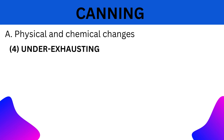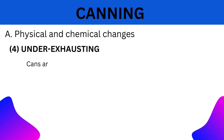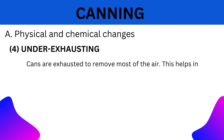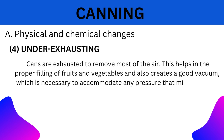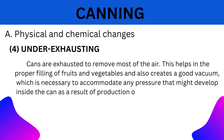7. Under Exhausting: Cans are exhausted to remove most of the air. This helps in the proper filling of fruits and vegetables and also creates a good vacuum, which is necessary to accommodate any pressure that might develop inside the cans as a result of production of hydrogen due to corrosion.